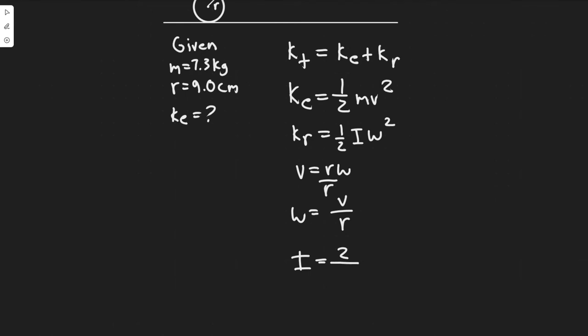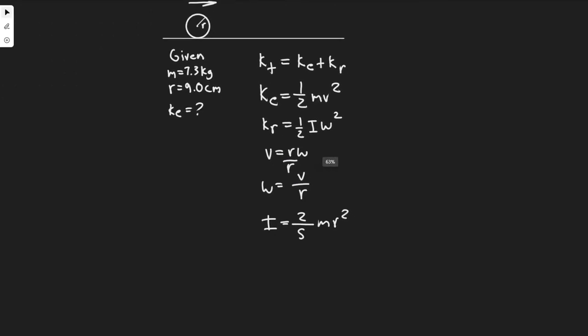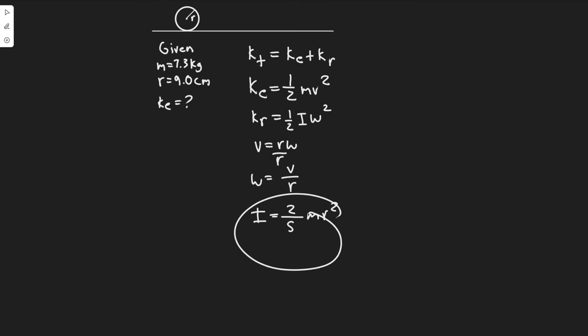The formula for that would be 2 over 5 m r squared, where r is the radius and m is the mass. So this would be the formula for the inertia, and we have omega.